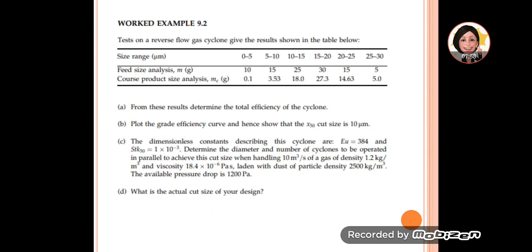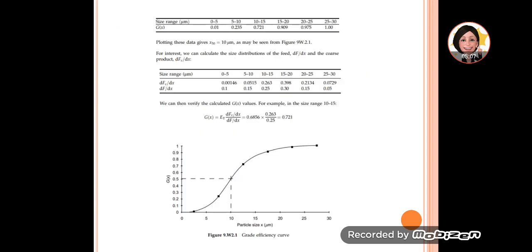For example, 0.1 divided by 10 gives 0.01. 5 divided by 1 gives 1. This is how we get this table of grade efficiency.